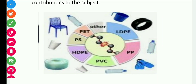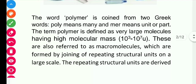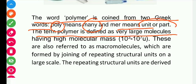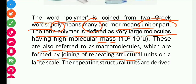Now let's understand what a polymer is. The word polymer is coined from two Greek words: poly means many, and mer means unit — meaning there are so many units. The term polymer is defined as very large molecules with high molecular mass, nearly about 10³ to 10⁷ units. These compounds are called polymers and are also referred to as macromolecules, which are formed by joining repeating structural units on a large scale.